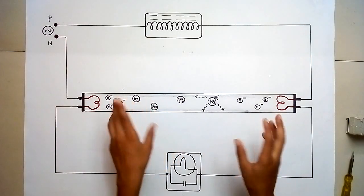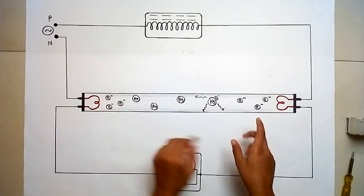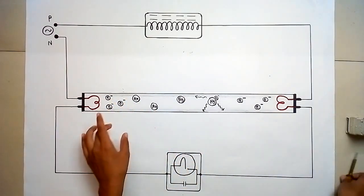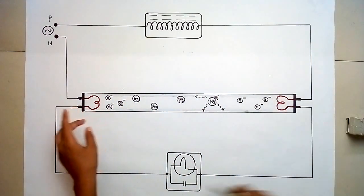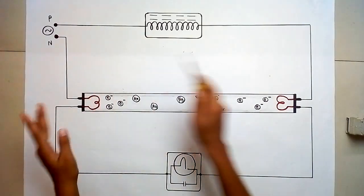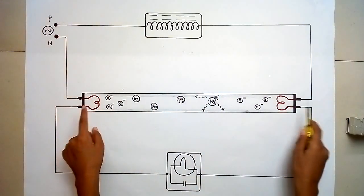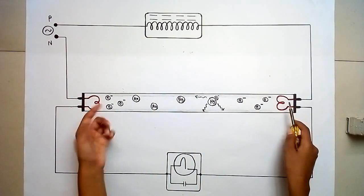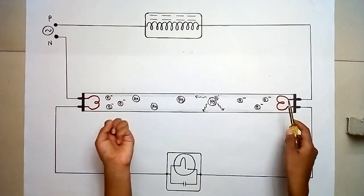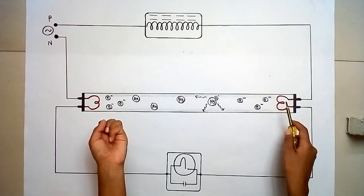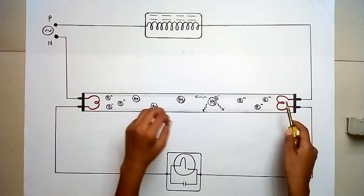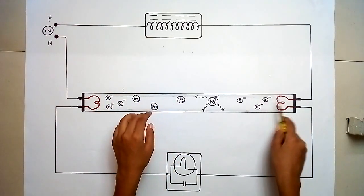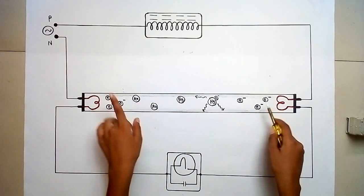During this time, when the circuit is closed, the tungsten filaments get heated up and they absorb the thermal energy supplied to them and release electrons using thermionic emission.